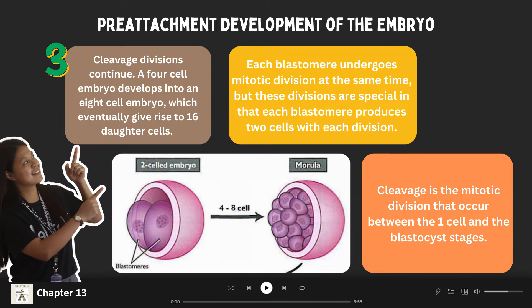Each blastomere undergoes subsequent divisions, yielding a four-celled embryo that develops into an eight-celled embryo, and then gives rise to 16 daughter cells. Blastomeres from two-, four-, and eight-celled embryos are totipotent. Totipotency describes the ability of a single cell to give rise to a complete, fully-formed individual. With each mitotic division, two cells are produced from each blastomere, so the embryo gains cell number but still contains the same total mass of cytoplasm it had as a one-celled zygote.